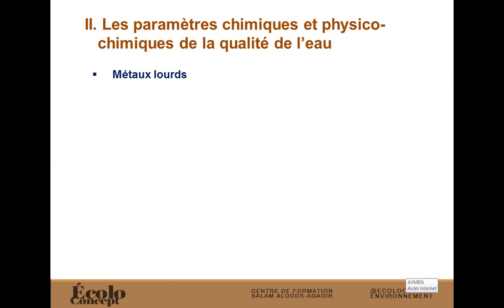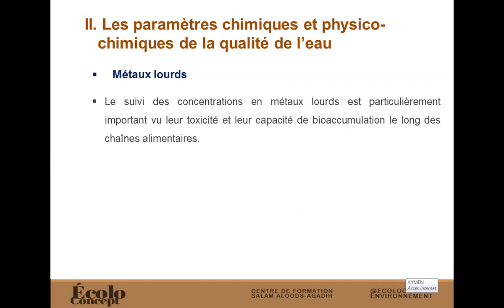Les métaux lourds : pour certaines activités, les rejets contiennent une certaine concentration de métaux lourds. C'est un suivi particulièrement important parce que les métaux lourds sont toxiques et ont une capacité de s'accumuler le long des chaînes alimentaires. Par exemple, si vous avez des poissons dans une rivière et qu'une entreprise génère des rejets fortement chargés en métaux lourds qui ne respectent pas les normes, ces poissons vont consommer cette eau polluée. Lorsque l'homme consomme ces poissons, on aura une accumulation au niveau de toute la chaîne alimentaire, causant des effets négatifs sur la santé humaine.